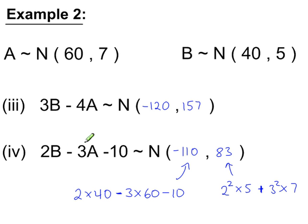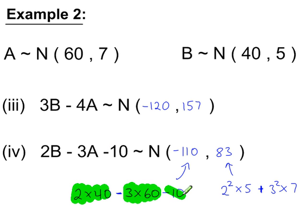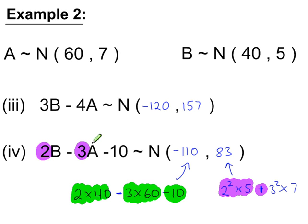For 2b minus 3a minus 10: this normal variable will have a mean of 2 times the mean of b, minus 3 times the mean of a, minus 10, giving us minus 110. And the variance is 2 squared times the variance for b, plus — because we only add variances and never subtract — 3 squared times the variance for a. The minus 10 has no variance, so the variance is 83.